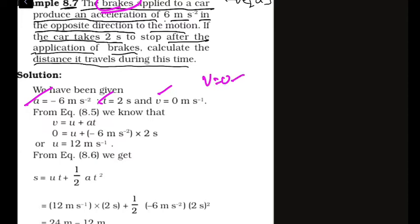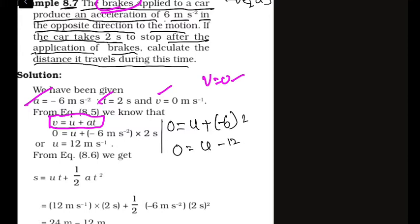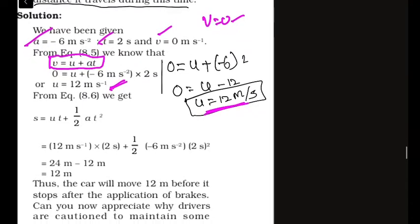Here a body moves at a particular speed, brakes are applied, and we find the distance traveled after brakes are applied. Since brakes cause retardation, acceleration is negative. Given data: A = -6 m/s², T = 2 seconds, final velocity V = 0.